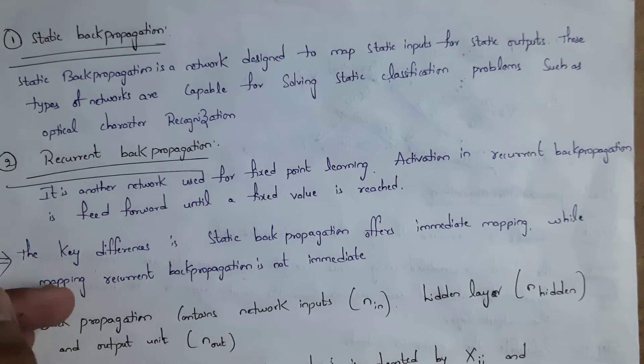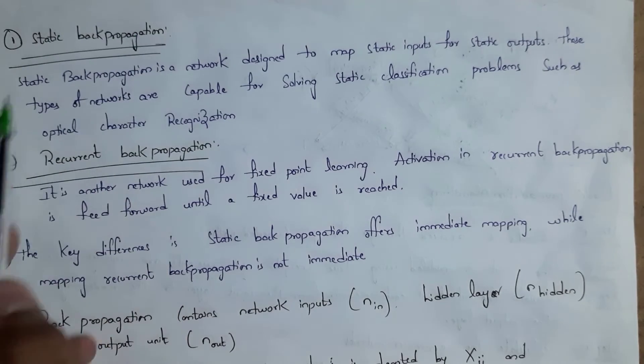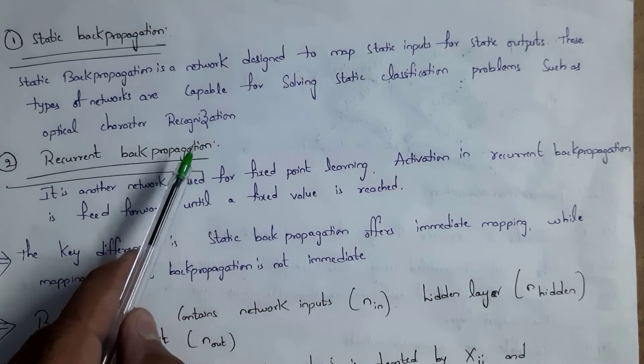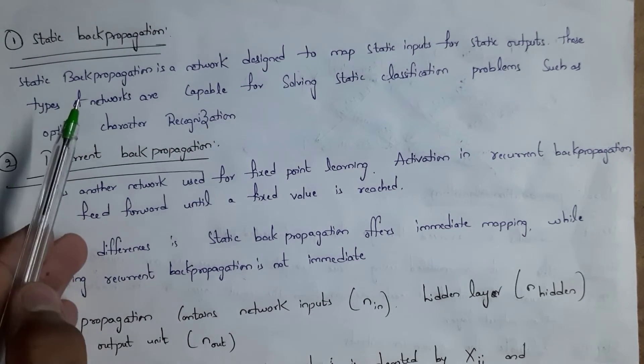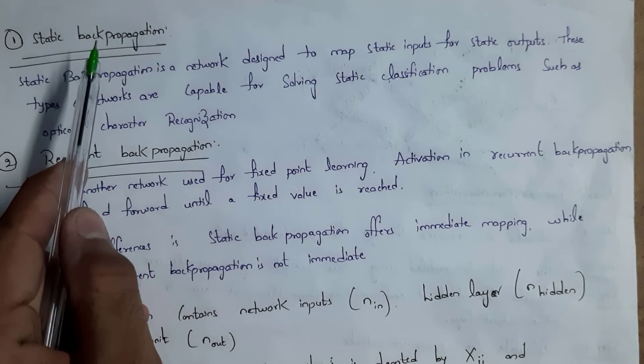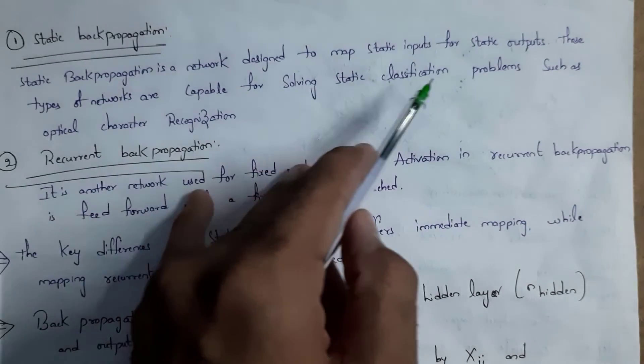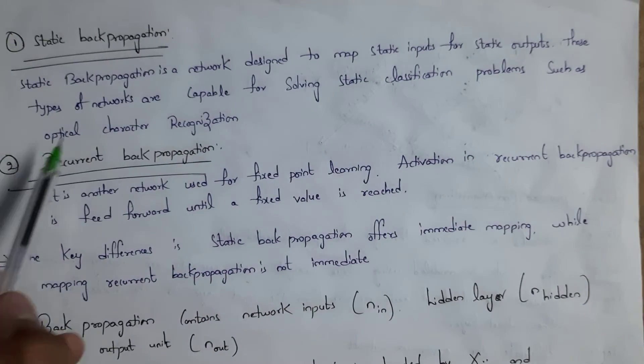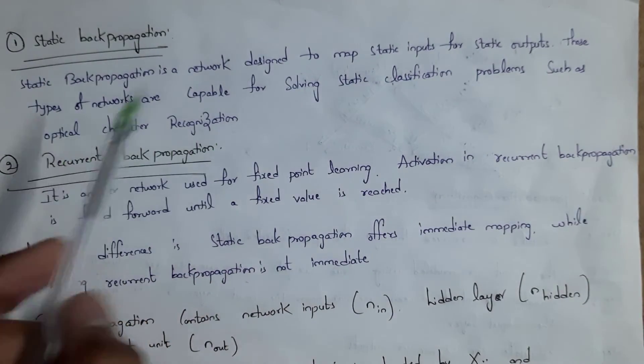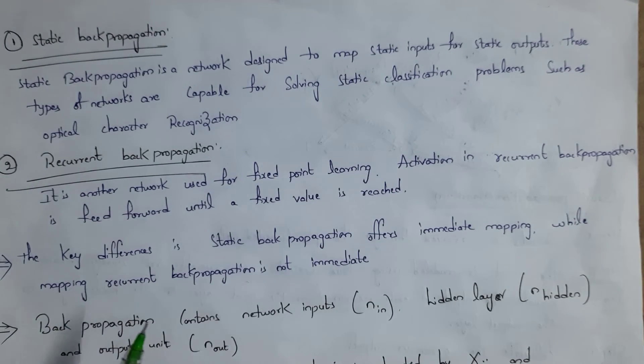Backpropagation networks are classified into two types. One is static backpropagation and next one is recurrent backpropagation. In static backpropagation, we map static input for static output and this is used for solving static classification problems. Optical character recognition is one of the examples of these static classification problems.